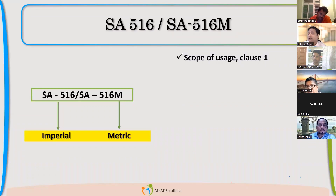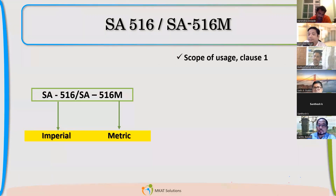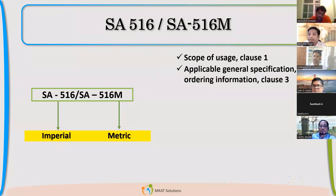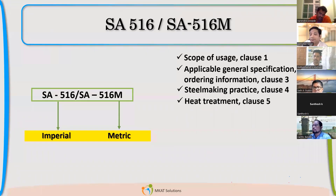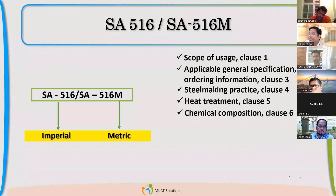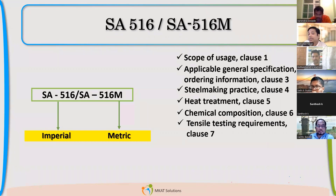First, it talks about scope of uses. In Clause 1 of ASME, you will find the scope — where we are going to use it and what is the purpose. Clause 3 covers ordering information. Clause 4 covers steel making practice. Clause 5 covers heat treatment process. Clause 6 is about chemical composition, and Clause 7 is about tensile properties.